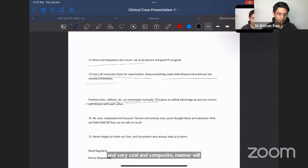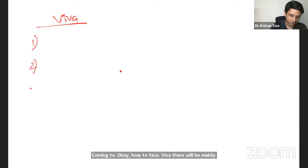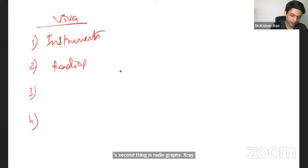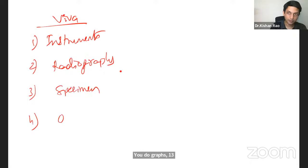How to face VIVA, VIVA, VIVA, VIVA, VIVA there will be mainly four stations. Correct. Four stations will be there. First thing is instruments, instruments. Second thing is radiographs, x-ray mostly, x-ray radiograph, radiographs. Third thing specimens. Four things operative procedures. Operative steps. Now, each station in each each category, you have to answer the four headings. I'll make it simple for you.